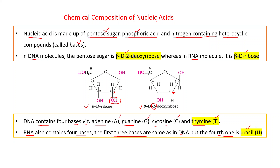After this discussion you must be able to write the structural difference between DNA and RNA. In the case of DNA, the pentose sugar is deoxyribose sugar; in the case of RNA, it is ribose sugar. In DNA the bases are adenine, guanine, cytosine, and thymine, while in RNA the bases are adenine, guanine, cytosine, and uracil.